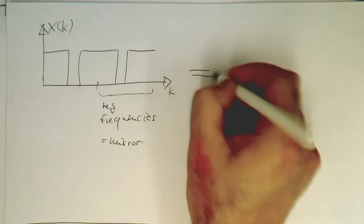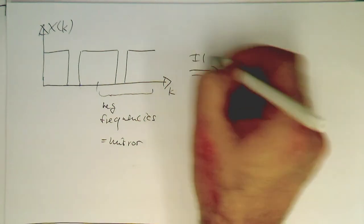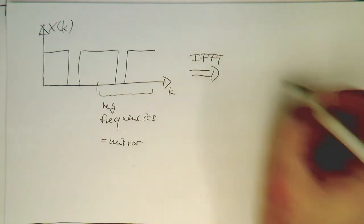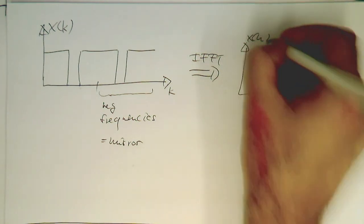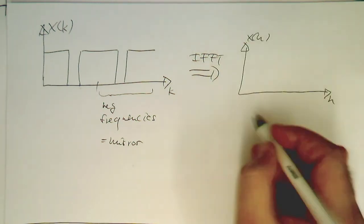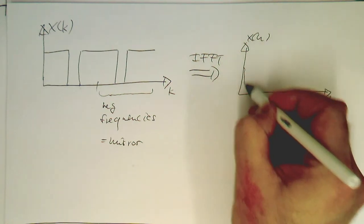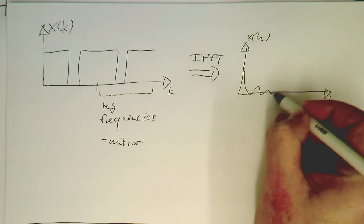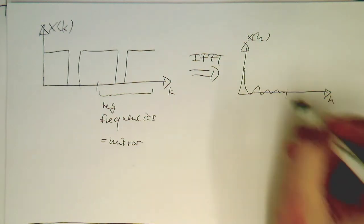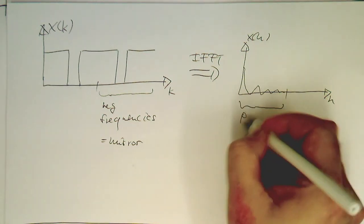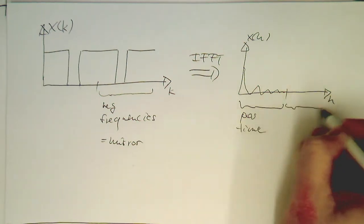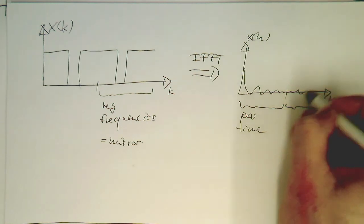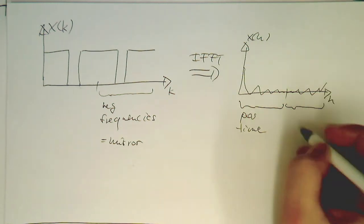So if you now do an inverse fast Fourier transform or DFT, then the same happens in the time domain. So if we have here x of n and this is n. And so now we see we have something like this. Then this here is positive time. And this here, so this looks like that. This is negative time.